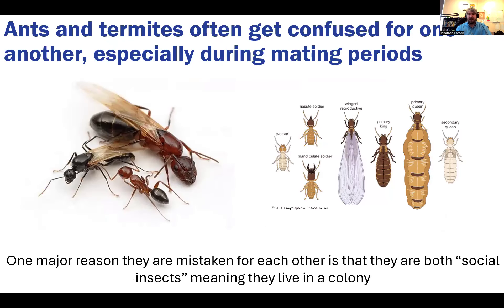When they get confused with each other, it often happens during the mating period, which is often in this spring wet season we have here in Kentucky. It boils down to the fact that both of these types of insects are social — they have large colonies with winged reproductives. These insects are different from many other bugs in that they live communally, have overlapping generations, and have divisions of labor, including a reproductive caste whose sole job is to mate and start a new colony.